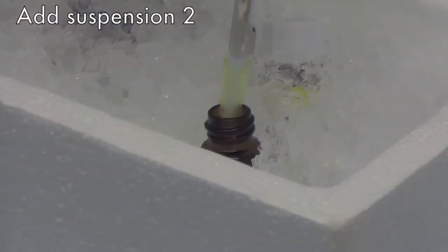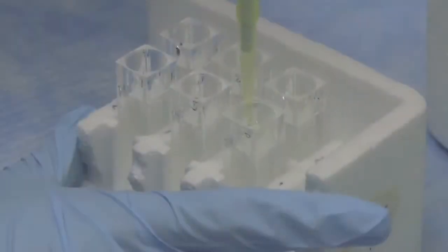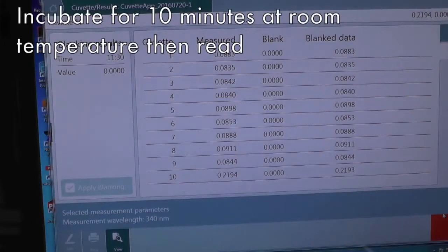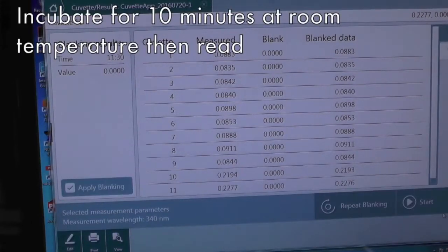Add the proper volume of suspension 2 directly into the cuvette and mix by pipetting up and down. Incubate for 10 minutes at room temperature, then read the absorbance.